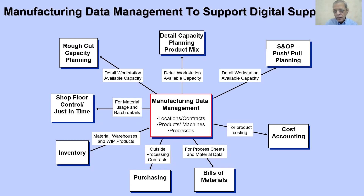Depending upon your production plan and normal processes, in some companies some products may be on a push basis and some on a pull basis, so that needs to be considered. This is the various data which gets synchronized into your manufacturing systems. Looking at the center — your locations, contracts, products, machines, and processes — various parameters are to be taken into consideration.